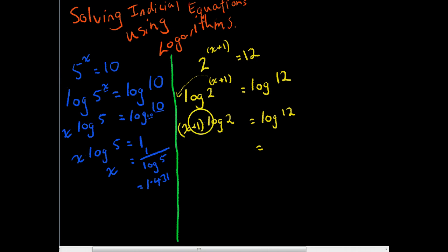Okay, now we can see that this is x plus 1 times log base 10, 2. So we can get rid of the log base 10, 2, move it to the other side by dividing both sides by log base 10, 2. So log 12 divided by log 2 equals x plus 1.